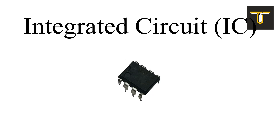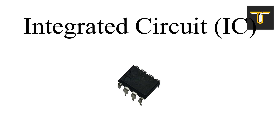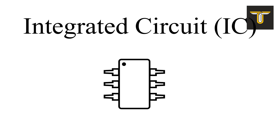An integrated circuit, or IC, is a set of electronic circuits fabricated on a single chip to perform a specific task. An IC can function as an amplifier, oscillator, timer, counter, and many other things. It may come in different sizes and different pin counts according to its functionality. The symbol of an IC is this.